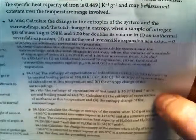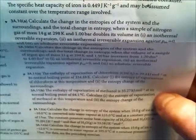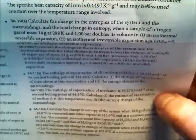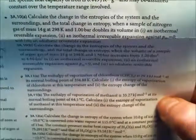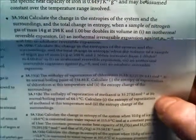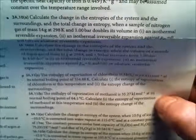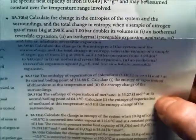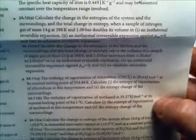We have a sample of nitrogen, 14 grams of nitrogen, initially 298K at one bar. And we have three scenarios. The first, isothermal reversible expansion. The second is an isothermal irreversible expansion. And the third is a reversible adiabatic.